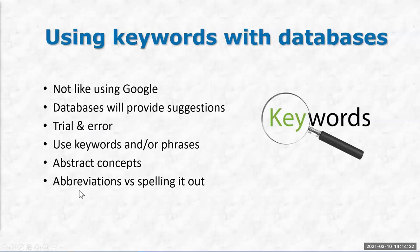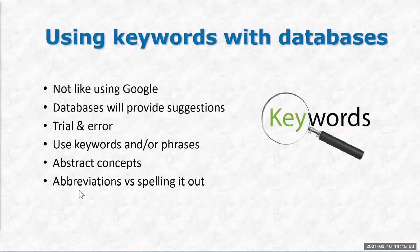Once you've got your list of keywords, the next step is to work with the databases. Using academic databases is not like using Google. You can't just enter a question and get lots of responses. You have to have a very refined list of keywords in order to get useful information out of the databases. Eventually they'll get more Google-like, but right now you need your main topic or maybe one of the narrower terms. The databases do provide suggestions based on what other people have searched, which is very helpful.